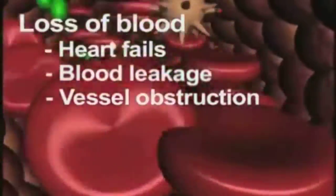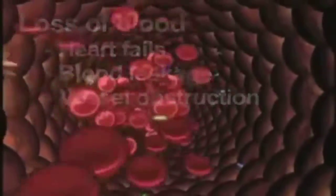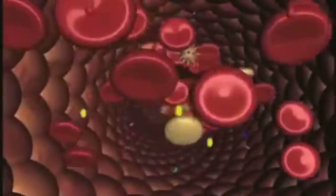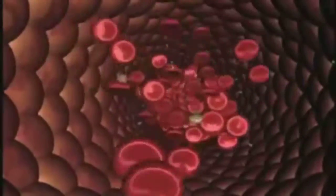The coagulation system has evolved to deal with the latter two events under normal circumstances by providing qualities which maintain blood in a fluid state within the vasculature while at the same time addressing leaks.